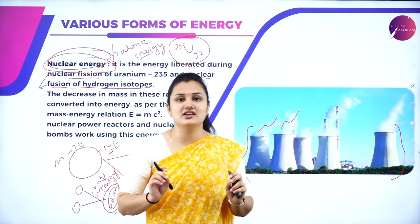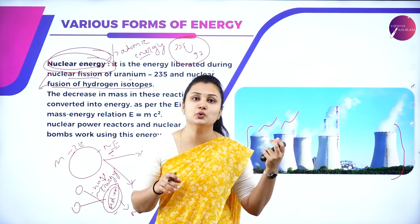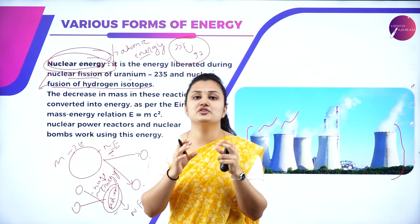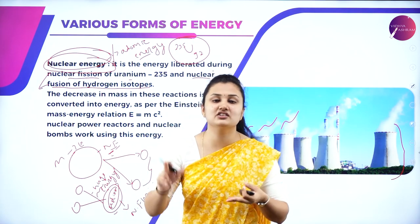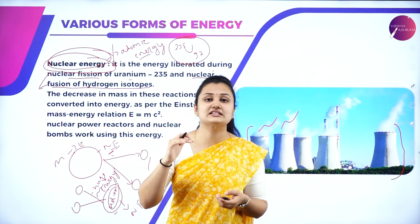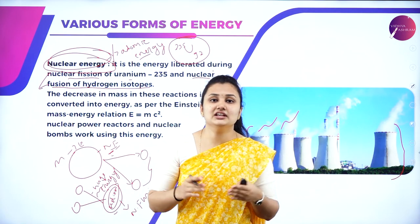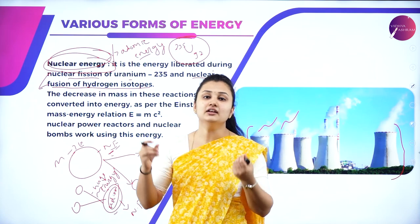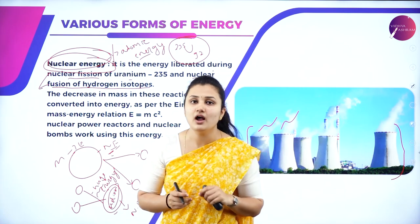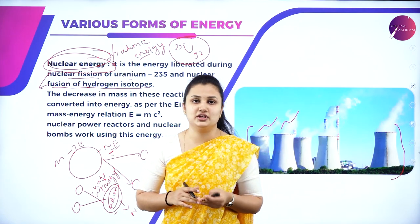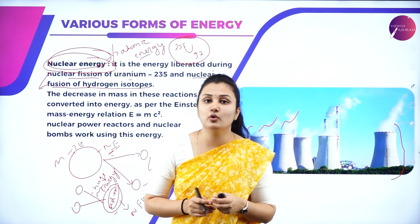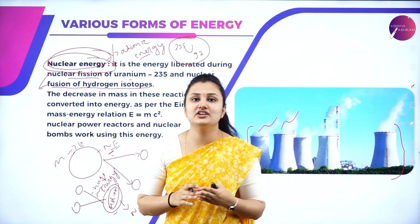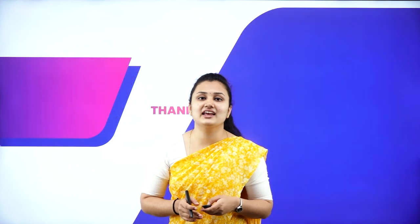That's all for today's session. We discussed various forms of energy: heat energy, light energy, electrical energy, chemical energy, sound energy, and nuclear energy. We also studied mass-energy equivalence — E = mc² given by Einstein — and nuclear energy where mass is convertible into energy. In the next session, I will cover more interesting topics on work, energy, and power, including what is power, what is collision, two types of collision, and a few numericals on chapter 6. Until then, take care and have a good day. Thank you.